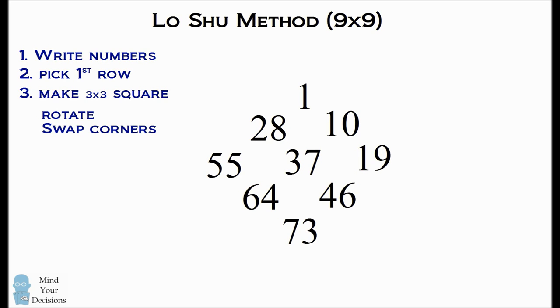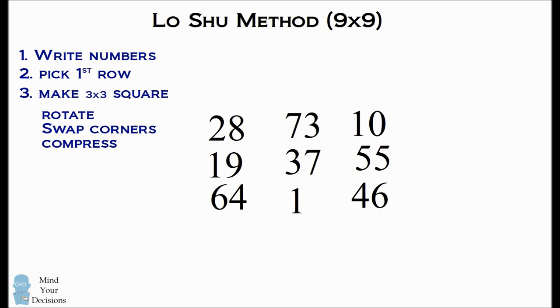We'll swap the numbers in the corners. And finally we'll compress this back into a square. And this is a magic square that involves the numbers from the first row.